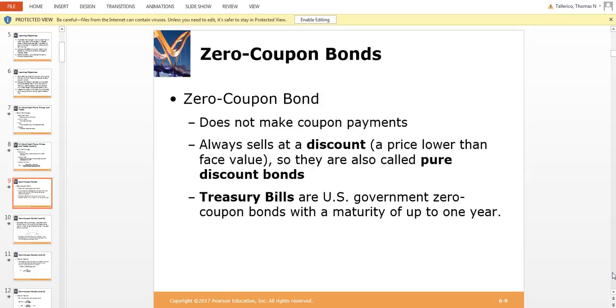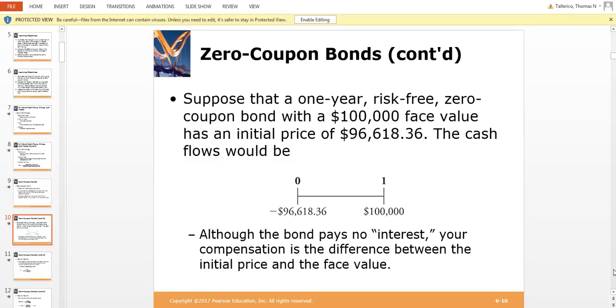When it matures, you get the full face value. So basically you don't wait in line at the mailbox to get your interest payments. That's why they call it a zero.